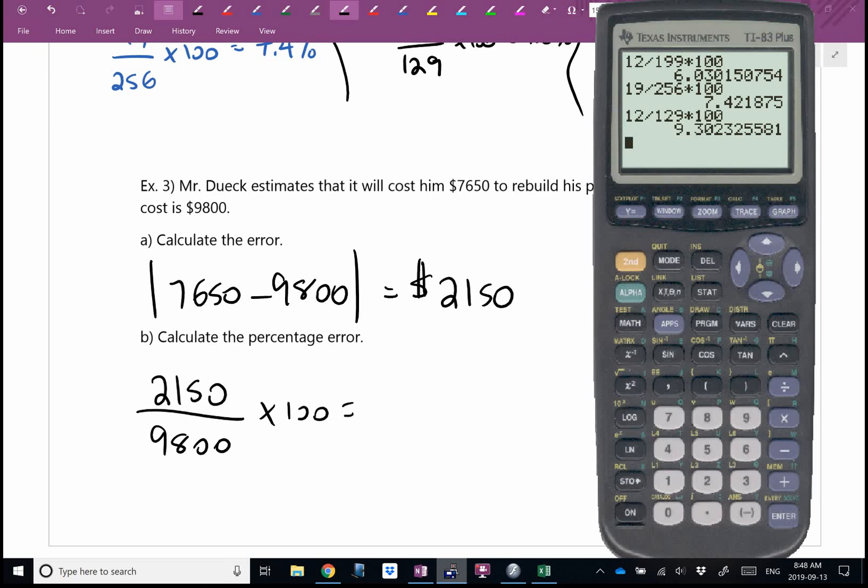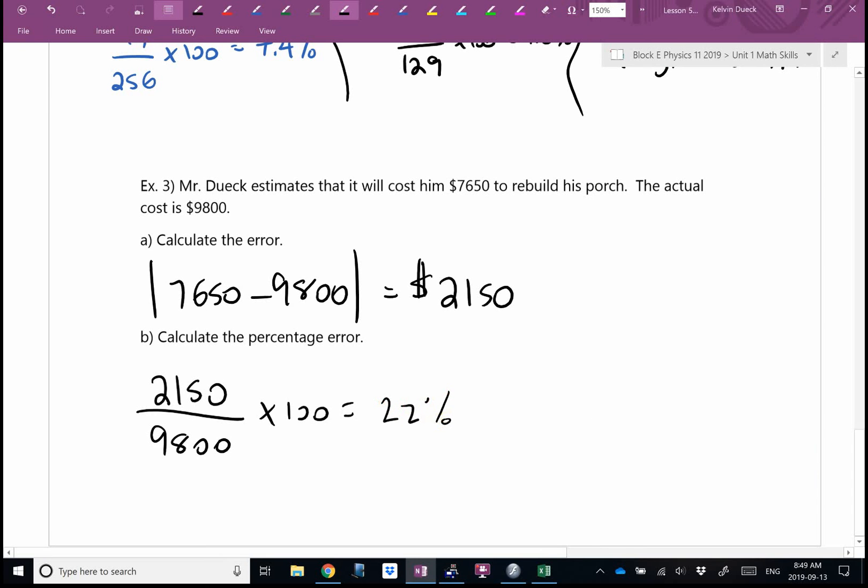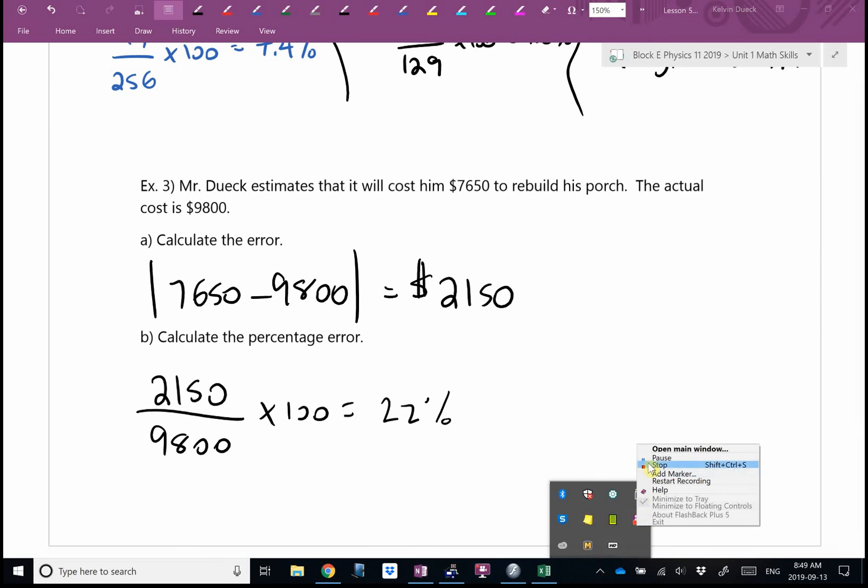Governments are notoriously bad with percentage error at guessing how much it will cost to build something. If you look at the Golden Ears Bridge history, for example, the original estimate was nowhere near close to the actual final cost. They're off and off by 100%. You get 21.9. I'll go 22. Is that okay? I'll get a couple of examples with you. That's the lesson, but we're actually going to apply this. So bear with me. I'm just going to pause the video.